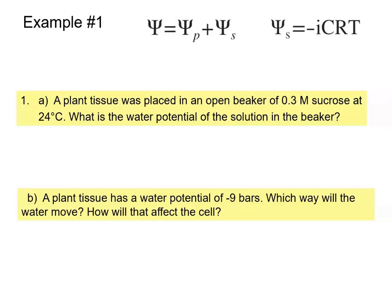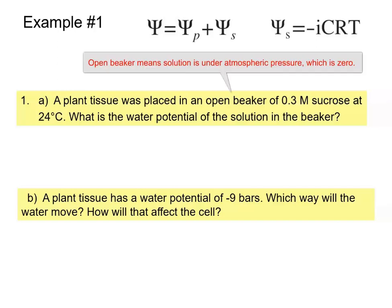The first problem: we have a plant tissue that was placed in an open beaker with a sucrose solution of 0.3 molarity at 24 degrees Celsius. We have to determine the water potential of the solution in the beaker.